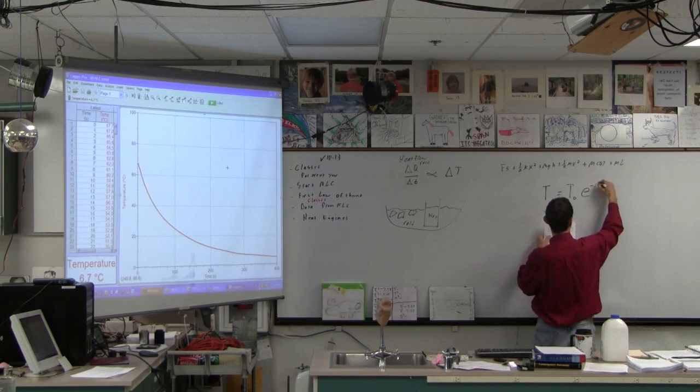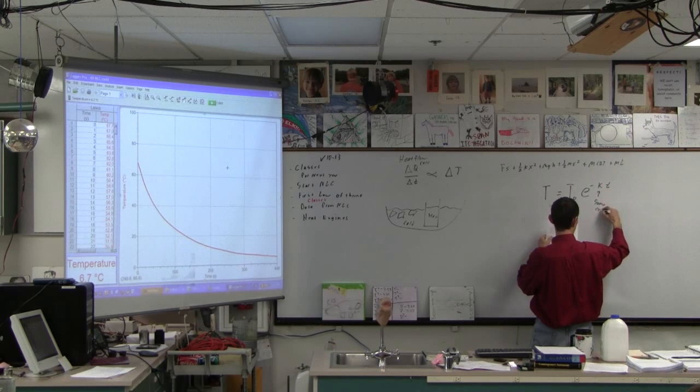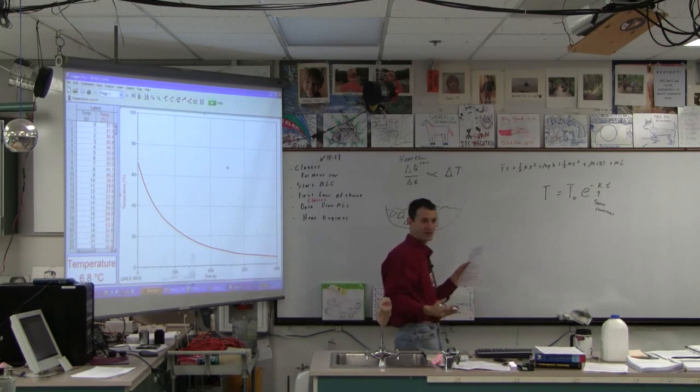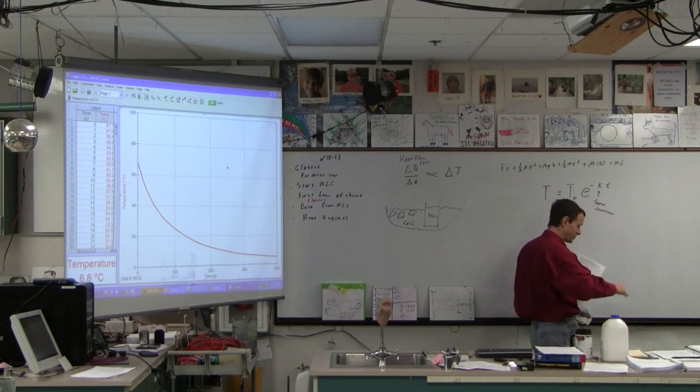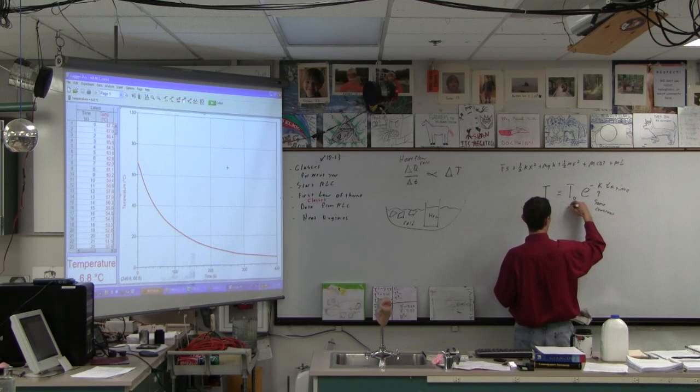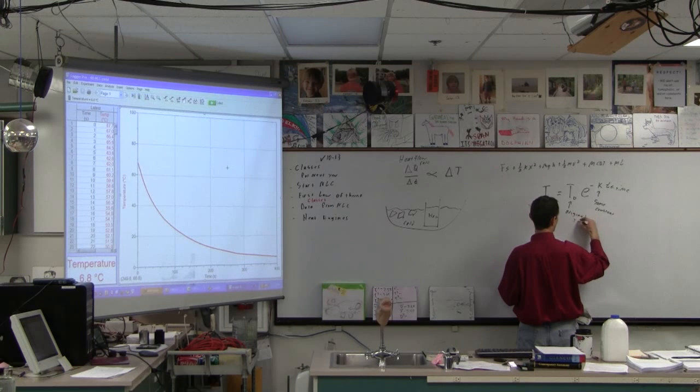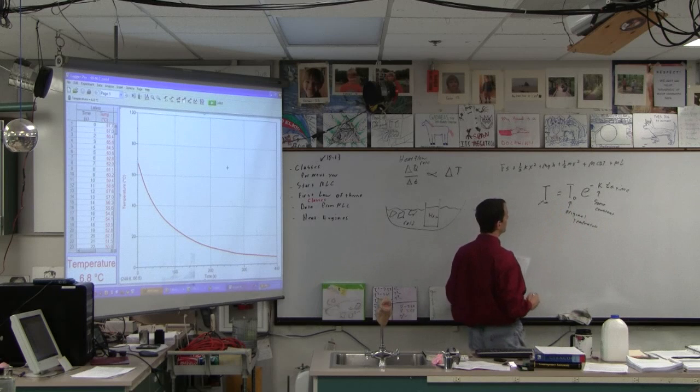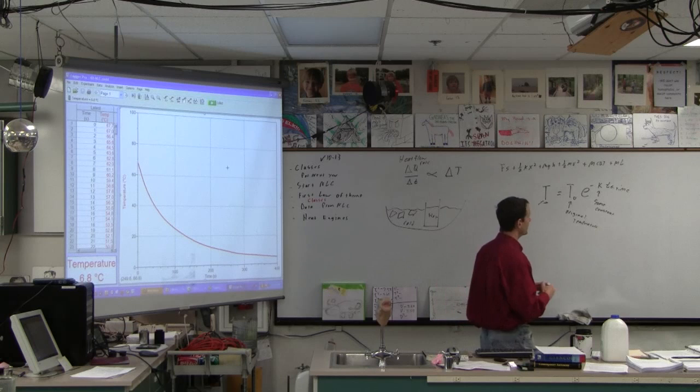The formula becomes T at a particular time is the original temperature T₀, and then it's an exponential decay e^(-KT). This is some constant called the decay constant. What's interesting is the same rule applies to radioactive decay, the same rule applies to current flowing off of a charge storage device. This is the time, this is our original temperature or initial, and then this is just the temperature at any given time.